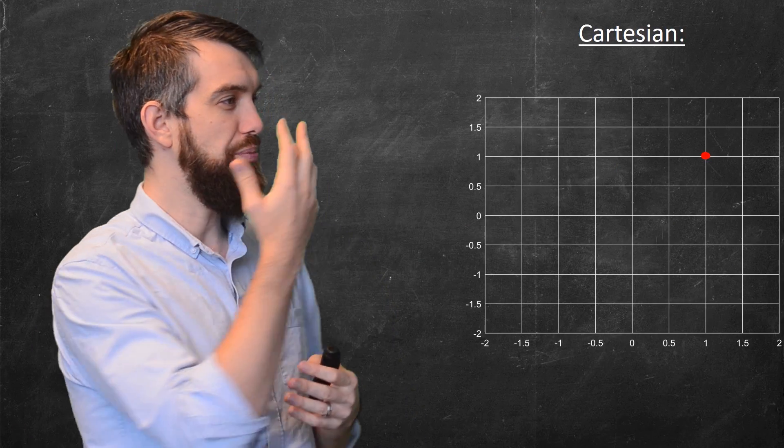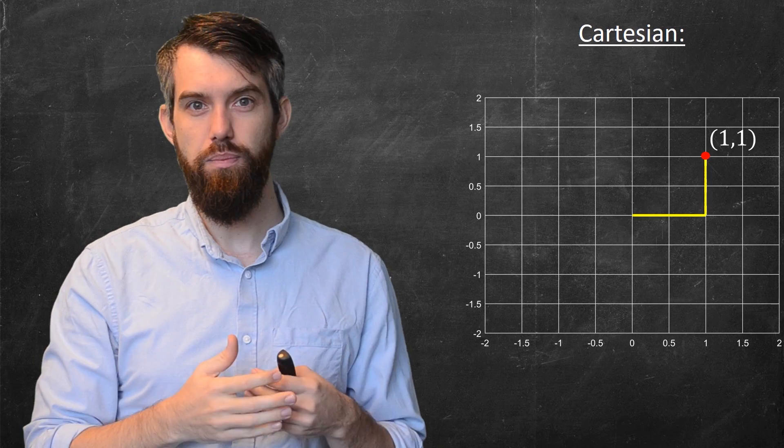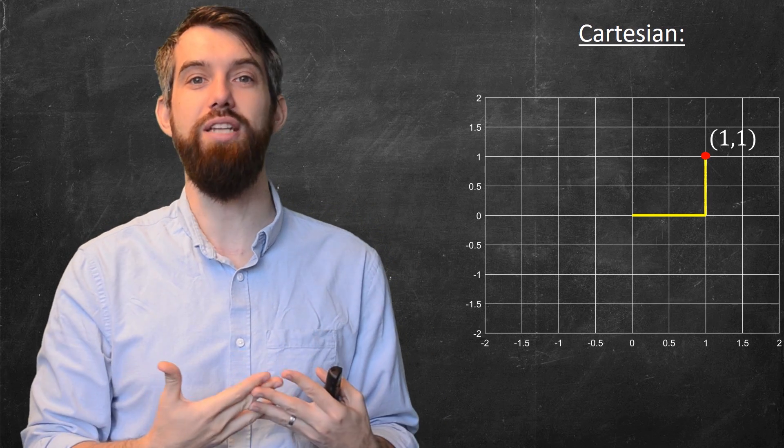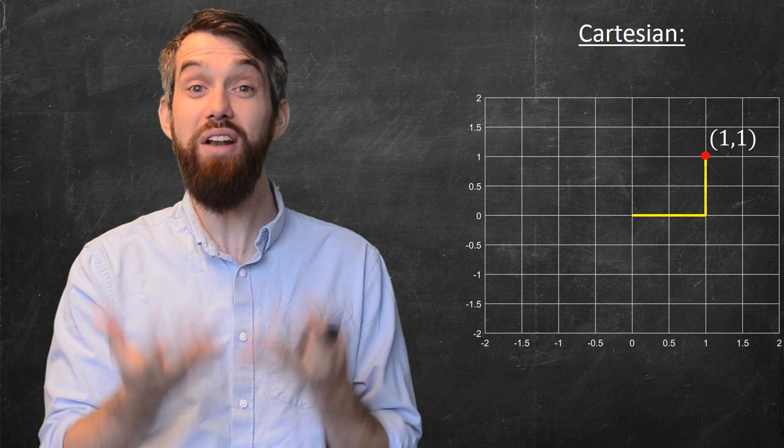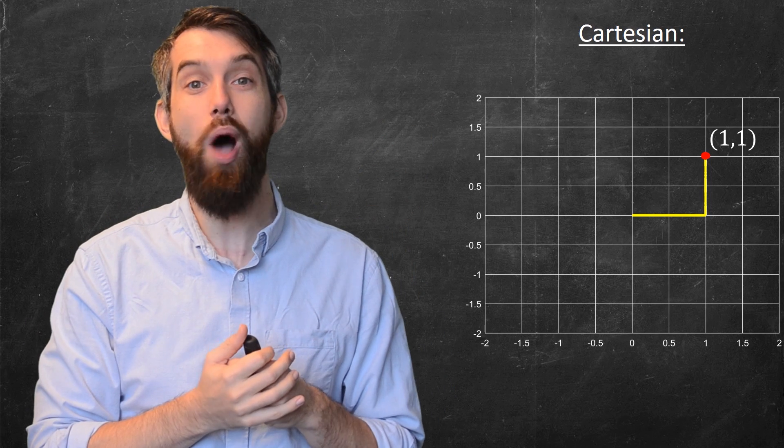Consider just normal Cartesian coordinates, and I've put some particular point up there. This is the point (1,1). But what does that really mean? Well, in Cartesian coordinates, it's an instruction. It tells you go 1 to the right, 1 in the x-direction, and then go 1 up, 1 in the y-direction.